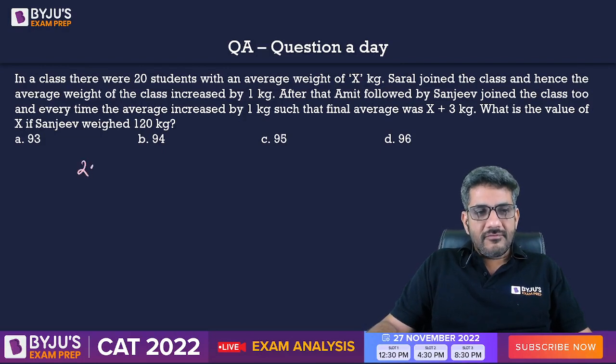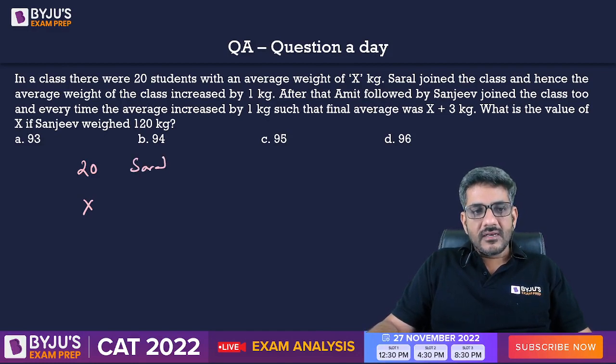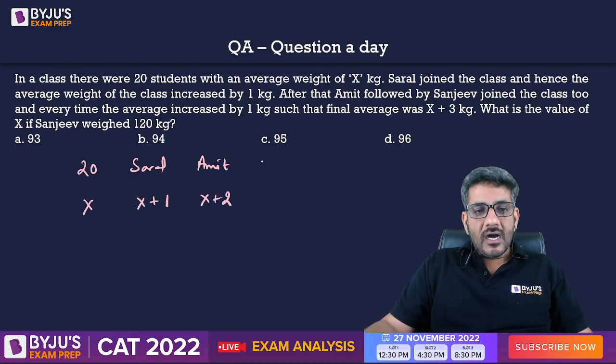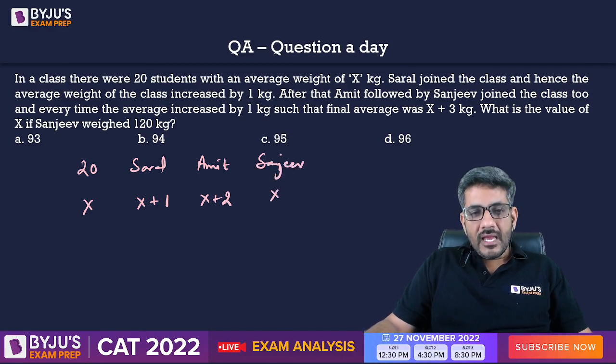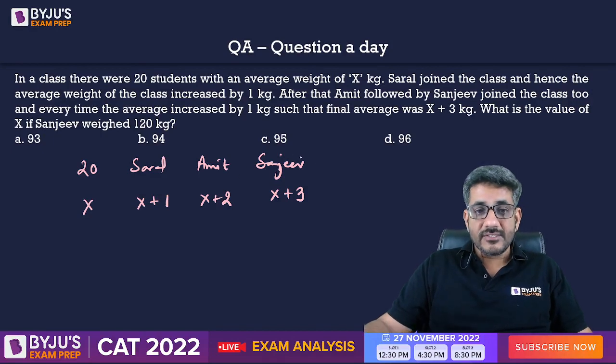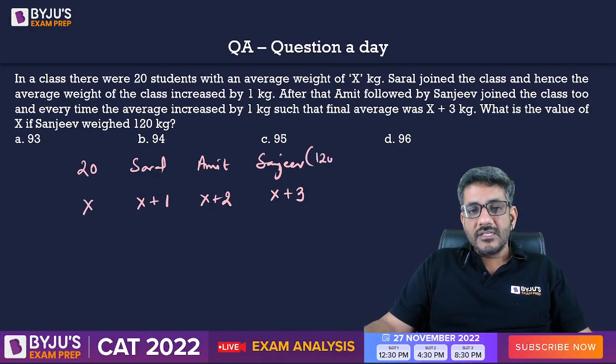So, initially, we have 20 students. The average weight of these 20 students was x kg. After that, Saral joins and the average weight becomes x plus 1. After that, Amit joined and the average weight becomes x plus 2. After that, Sanjeev joined and the average weight would become x plus 3. The question is asking you about x and he has already given you the weight of Sanjeev is 120 kg.